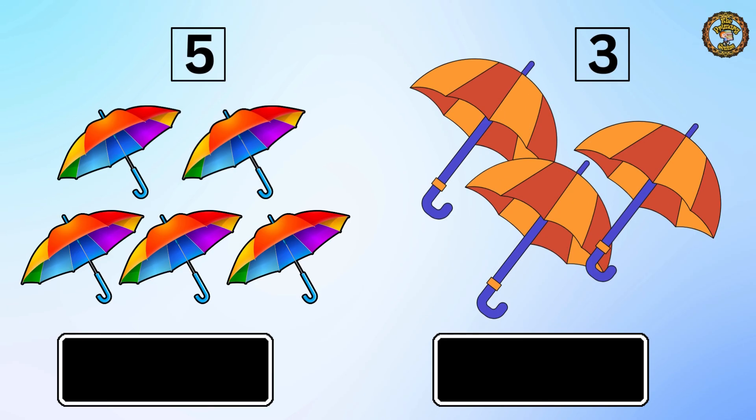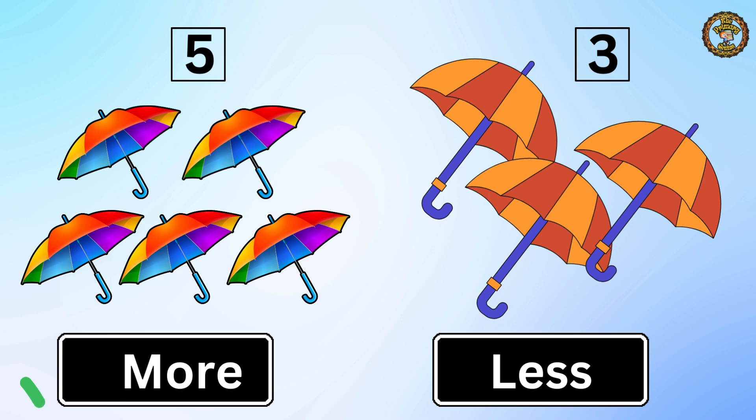Next, we have five umbrellas on the left and three umbrellas on the right. Which one is more? That's correct — five umbrellas are more than three umbrellas.